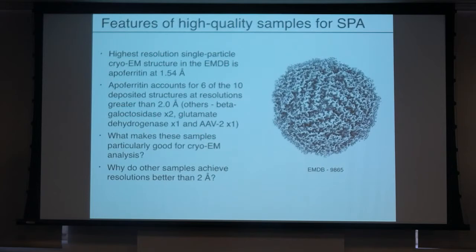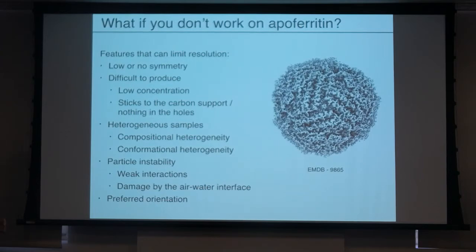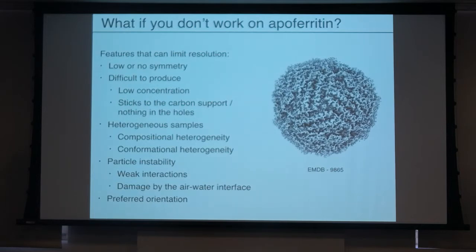Other samples that can also achieve high resolution are viruses and other highly symmetric molecules. Most of these large protein complexes we've been talking about are unlikely to achieve this. Some of the reasons they're limited in resolution: low or no symmetry. Highly symmetric molecules have largely been solved — people worked extensively on them because that was traditionally what EM was useful for. Now people are looking at large multi-component complexes with no symmetry, where you can't use the traditional high-symmetry approach. Instead you have to take many views and try to sort them into their various states.